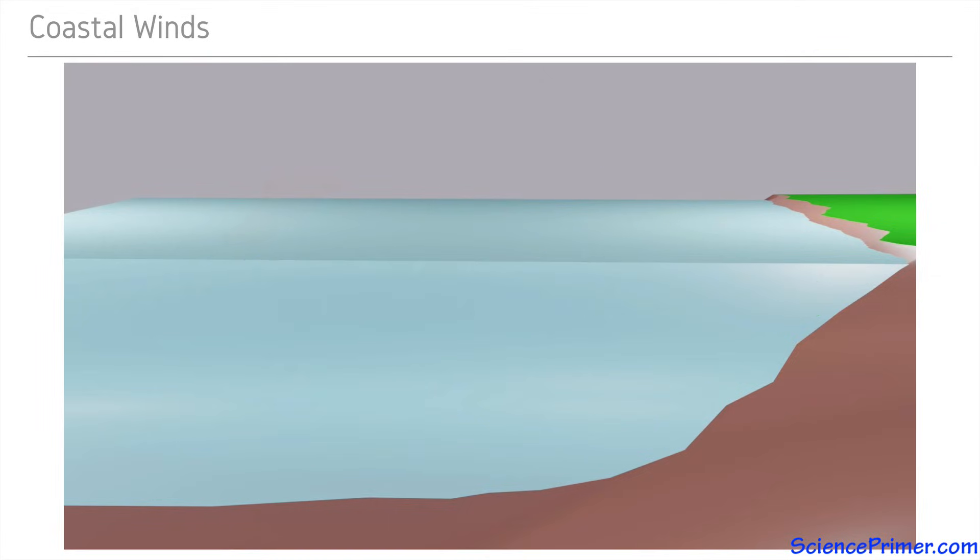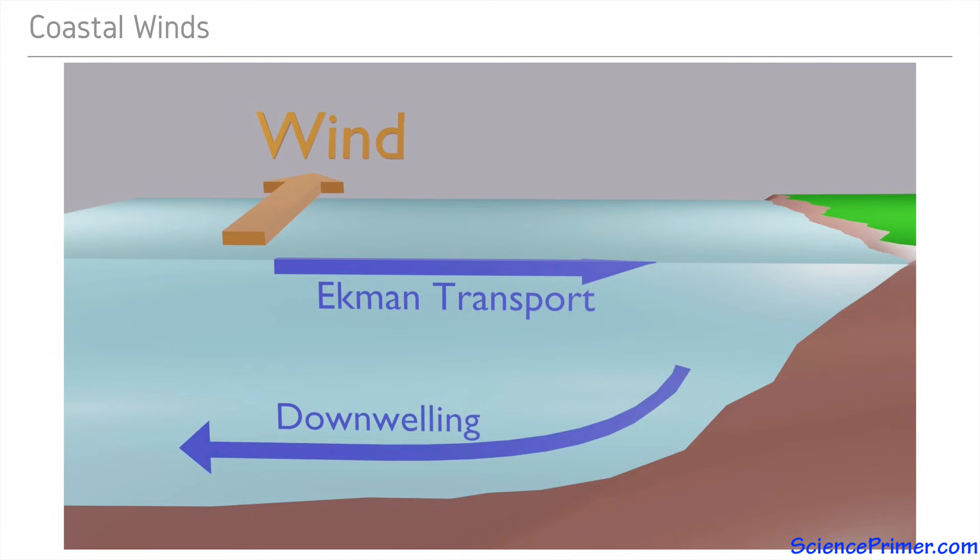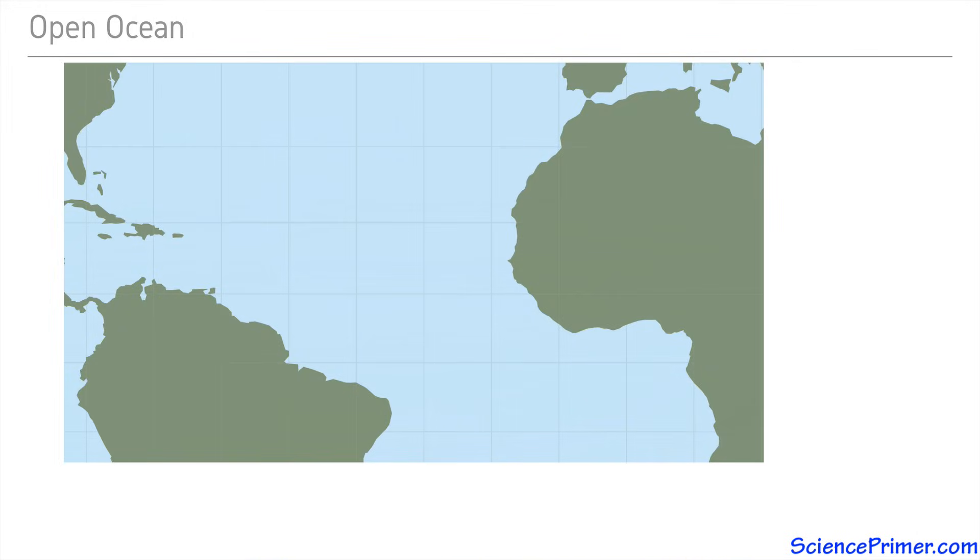Wind blowing in the opposite direction pushes surface water towards the coast. As water piles up at the shore, it is forced down, creating downwelling. The concentration of relatively nutrient-poor surface water makes these regions less productive. Ekman-driven up and downwelling are not limited to coastal environments.